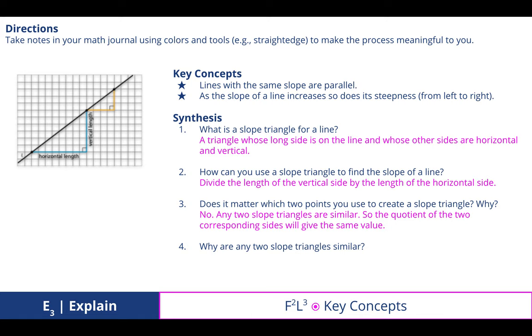So no, any two slope triangles are similar, so the quotient of the two corresponding sides will always give the same value. And then number four, why are any two slope triangles similar? Because they are right triangles whose other angles are corresponding angles for a transversal meeting parallel grid lines. Again, there's your corresponding angles for this one, and there's your corresponding angles for this side, and there's your corresponding 90 degree angle.